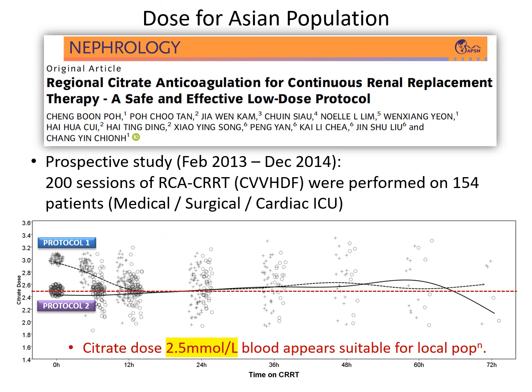My study group explored the dose of citrate in RCA for an Asian population. In Protocol 1, we started citrate at 3.0 millimoles per liter of blood, but found it was down-titrated to an average dose of 2.5 millimoles per liter. In Protocol 2, the citrate dose was started at 2.5 millimoles per liter, and the average dose remained the same. By starting with a lower dose, we reduce the overall citrate exposure to patients.